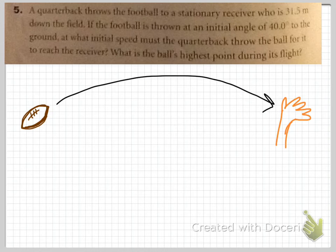Hi, this is Moser with more helpful hints on number 5 in the 3E book problem. We've got a football being thrown downfield 31.5 meters. It's thrown at an initial angle of 40 degrees.